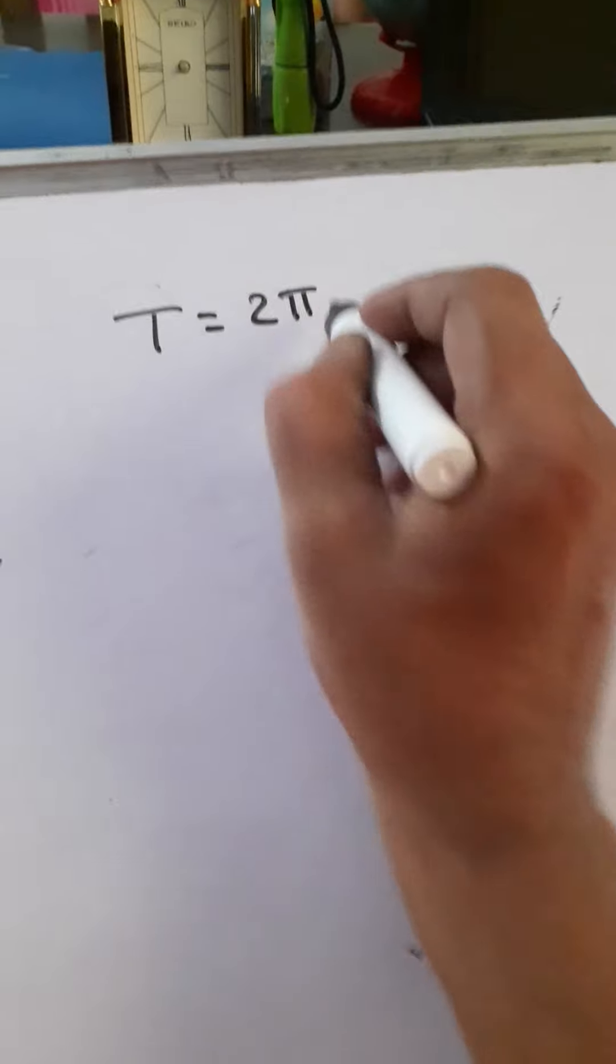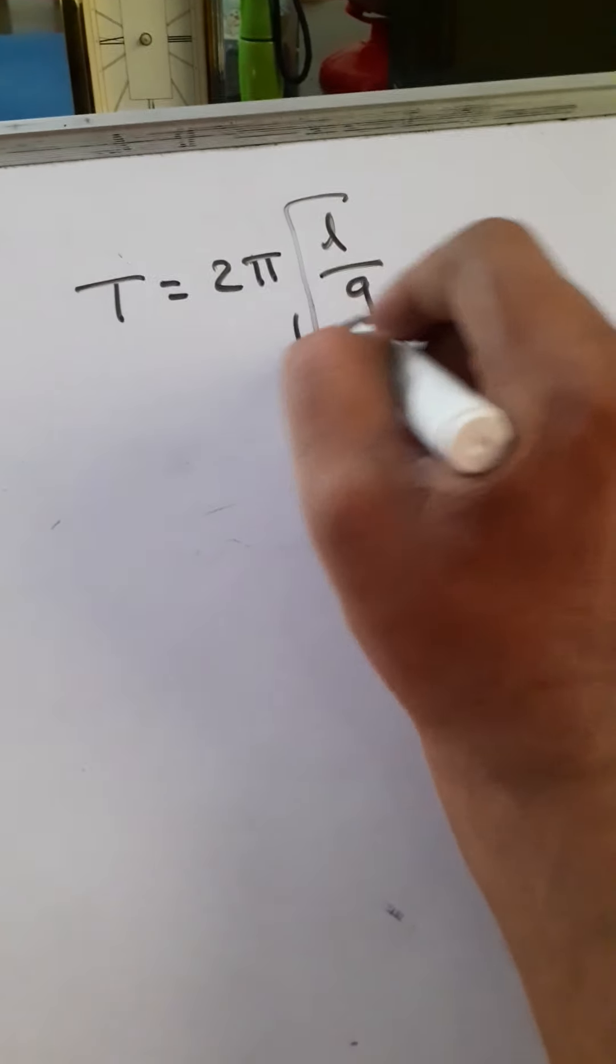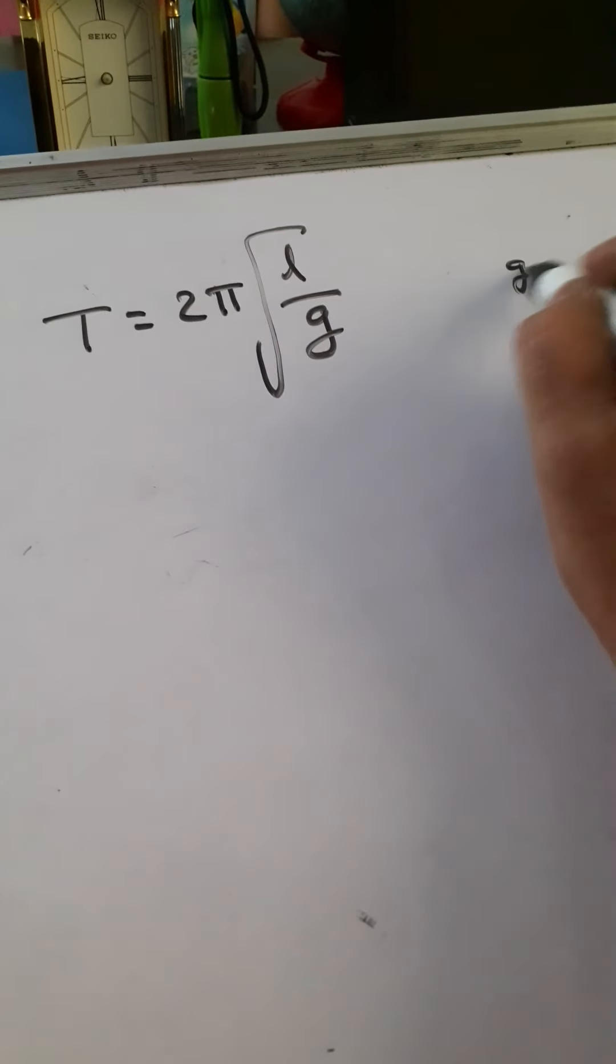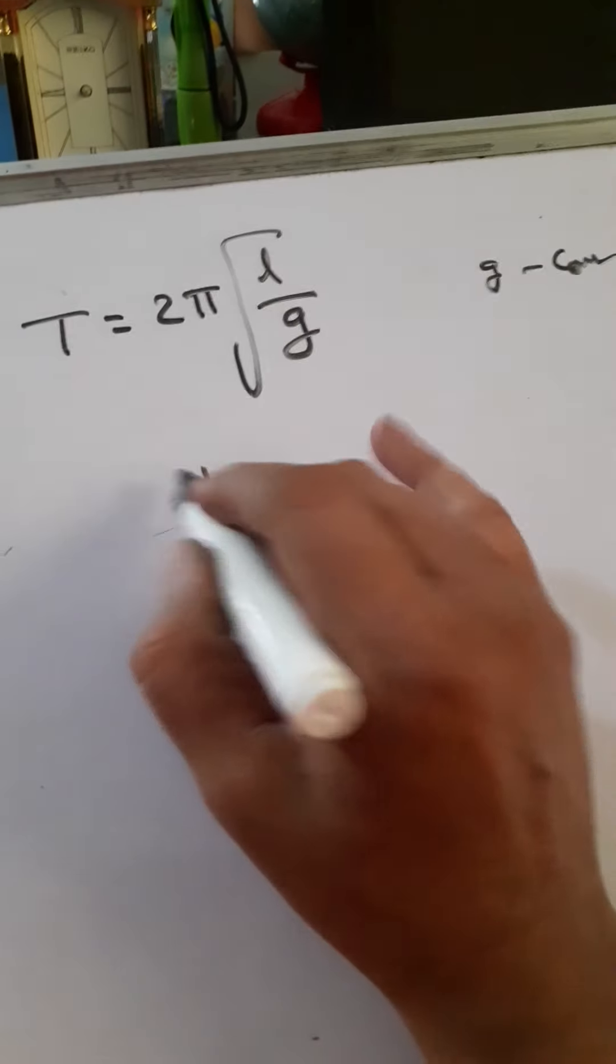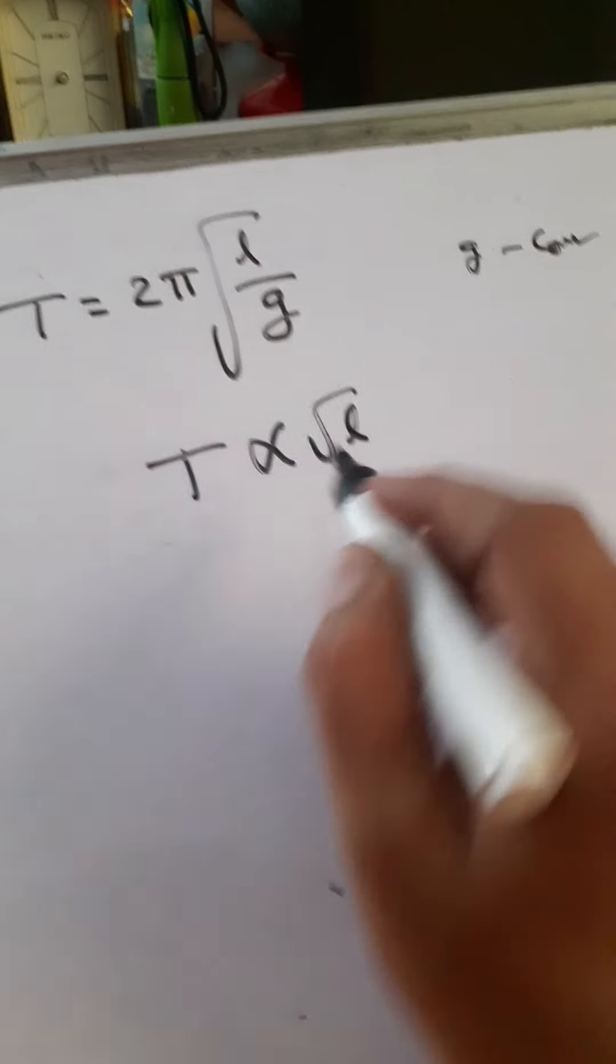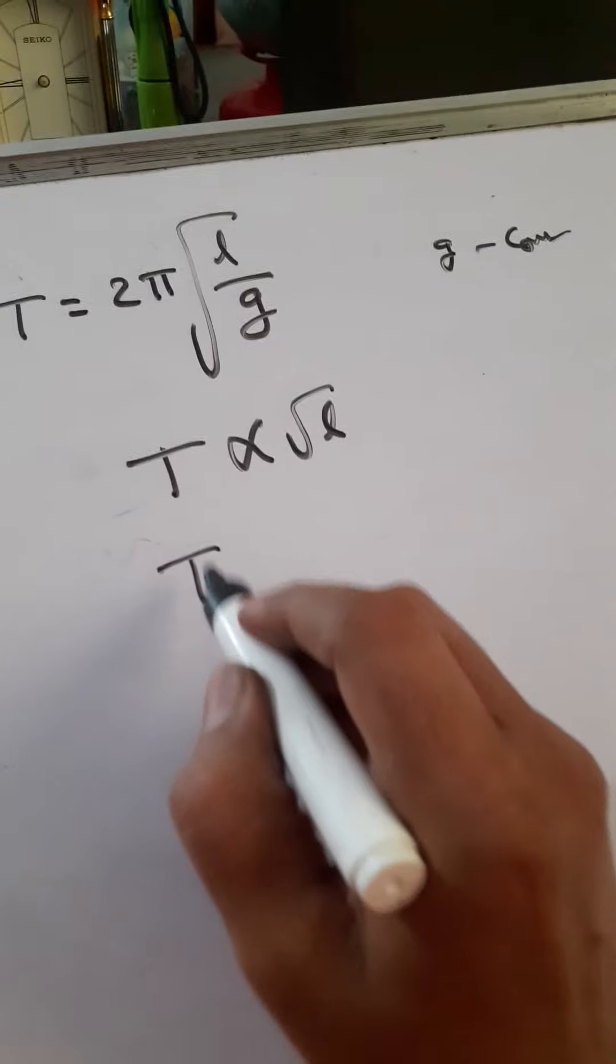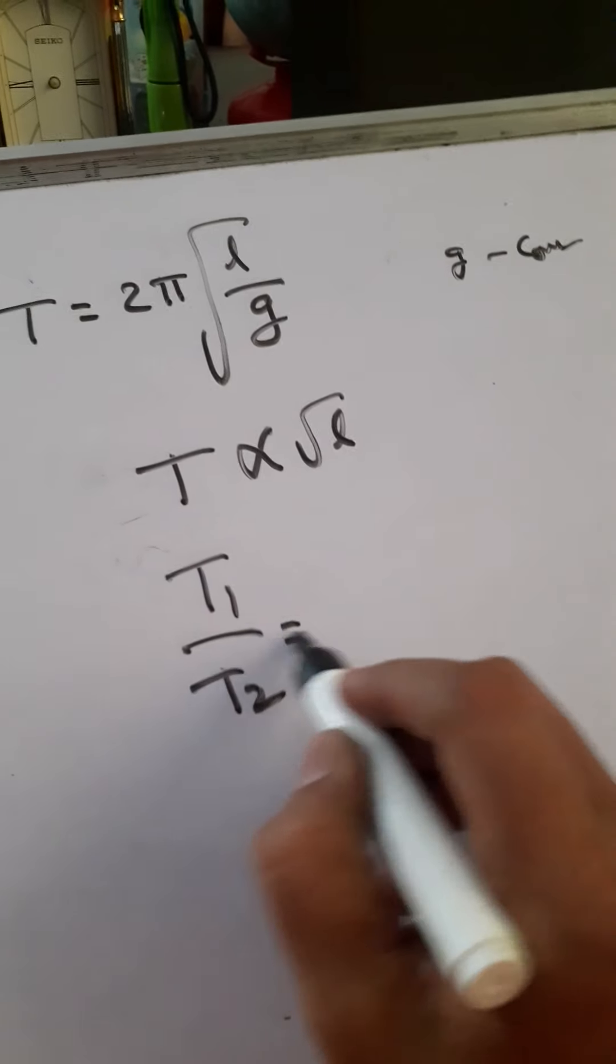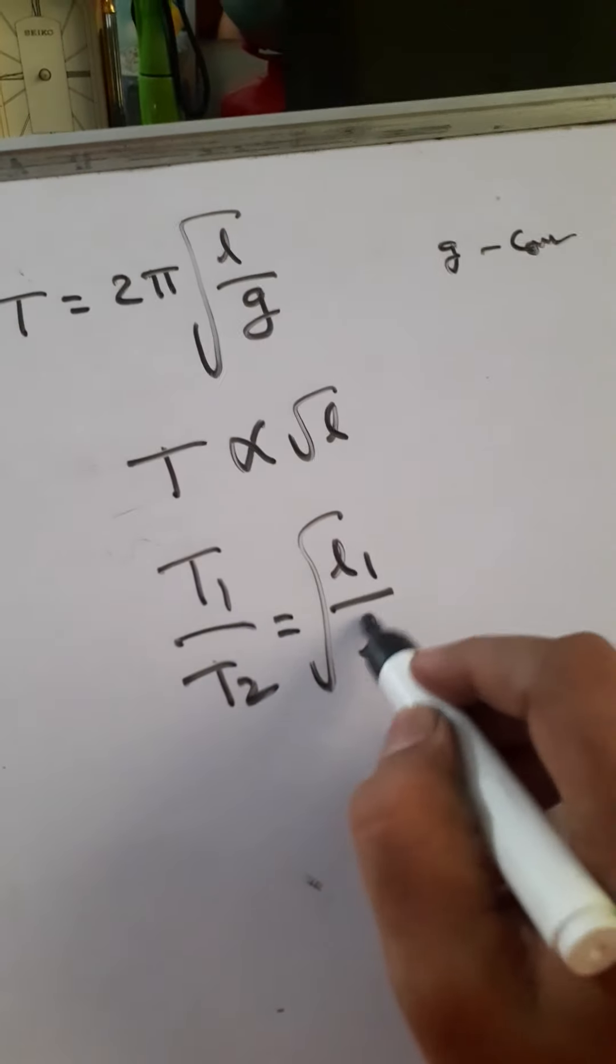Time period of pendulum: 2 pi root of L by G. On earth, G constant. Therefore, T proportional to root L. Therefore, you have to write T1 by T2 is root of L1 by L2.